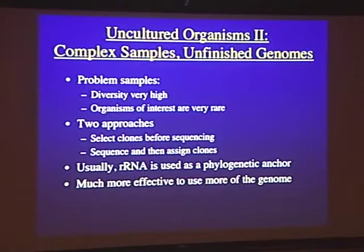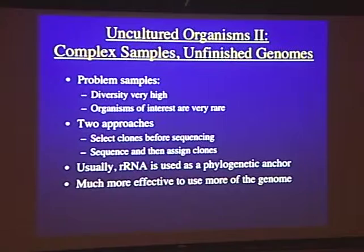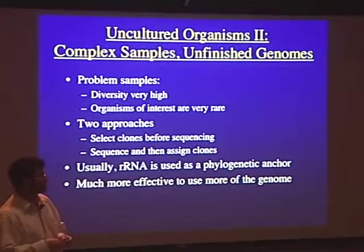Coming back to this problem in all studies of uncultured organisms: how do we map the DNA from an environmental sample if we're not able to close the genome of the organism? We have these more complex samples and would like to figure out who all the pieces of DNA come from. Most of the people doing studies like this — in a field called metagenomics or environmental genomics — have been relying upon ribosomal RNA to try and anchor fragments from their environmental sample.